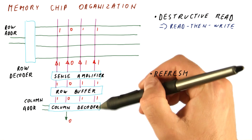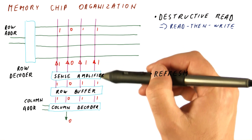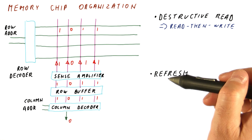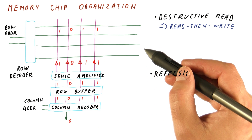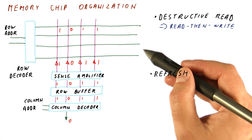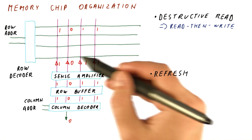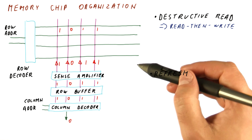A destructive read and then a write will refresh the row, but we cannot rely on the processor to access every row in memory so that we don't have to do anything else. In fact, when you have caches, it often happens that the rows that are very popular and accessed by the processor all the time are actually the ones that don't get refreshed this way. The reason is that those become cache hits — the cache keeps that data because the processor wants it so often — so we end up not accessing memory for things the processor uses most often. We cannot even rely on the program to go through the whole memory.